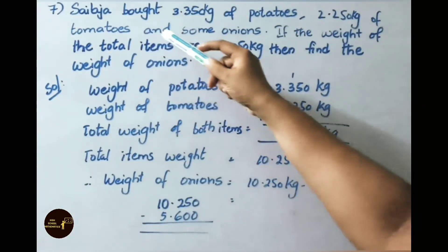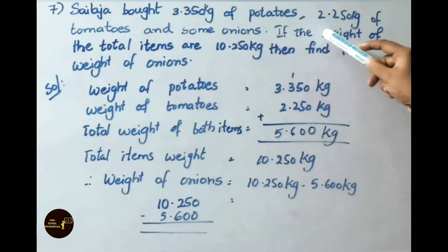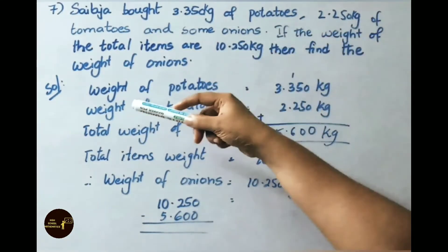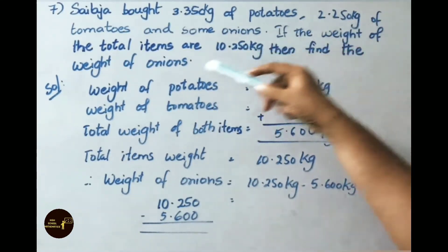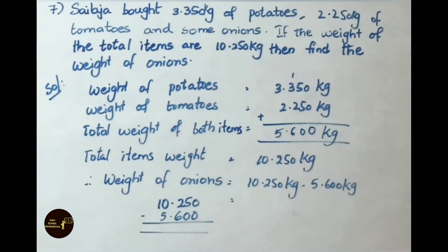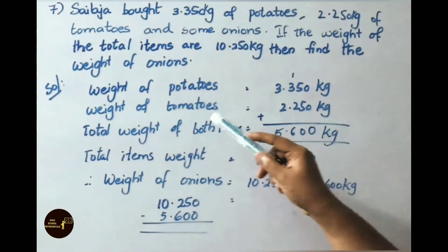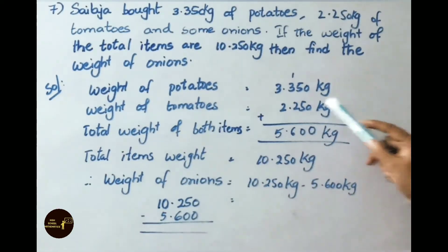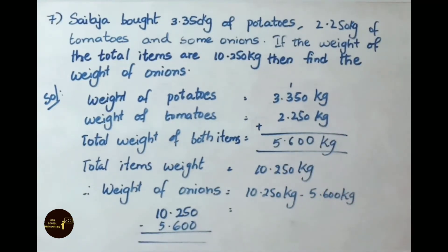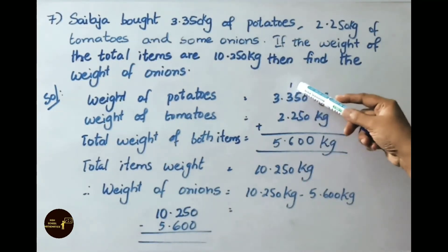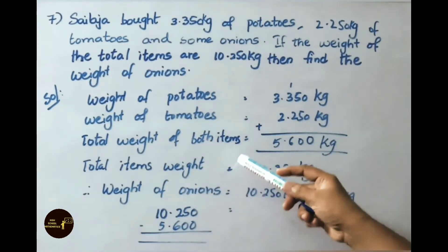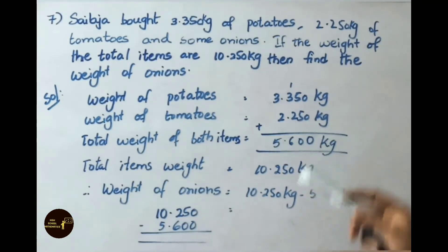See now question number 7. Siloja bought 3.350 kg of potatoes, that is 3 kg 350 grams, and 2 kg 250 grams of tomatoes, and some onions. The total weight of all items is 10 kg 250 grams. Find the weight of the onions. Weight of potatoes equals 3.350 kg and weight of tomatoes equals 2.250 kg. Adding them: 3.350 plus 2.250 equals 5.600 kg, that is 5 kg 600 grams.